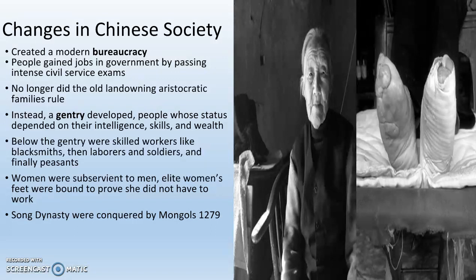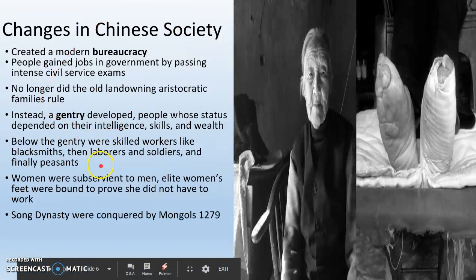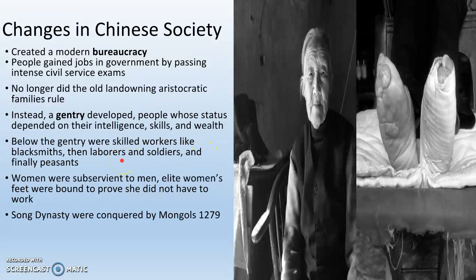Generally, the Chinese still do it this way. It's not democratic like electing officials, but it is largely merit-driven. Aristocracy — the nobles — are still around, but largely weak. These bureaucrats, these everyday guys, are the ones making the rules. A gentry develops — people whose status depends on their intelligence, skills, and wealth, because these are the guys passing the exam and becoming bureaucrats. Below the gentry are skilled workers like blacksmiths, then laborers and soldiers, and finally peasants at the very bottom.